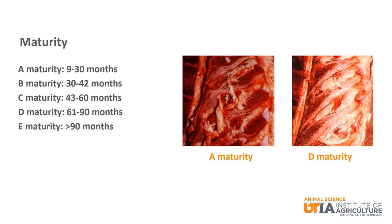There are five maturity groups, A through E. A maturity is the youngest group at nine to thirty months of age, while E is the oldest group at greater than ninety months. When you think about the typical cycle of a beef calf through the various stages of beef production, most of these calves will fall in the A maturity group as they will be fifteen to twenty-four months of age at harvest.